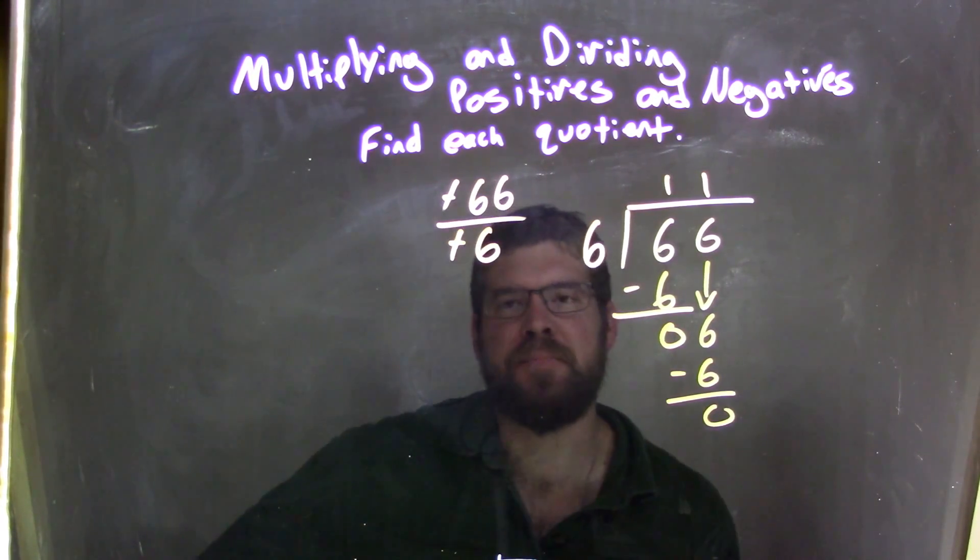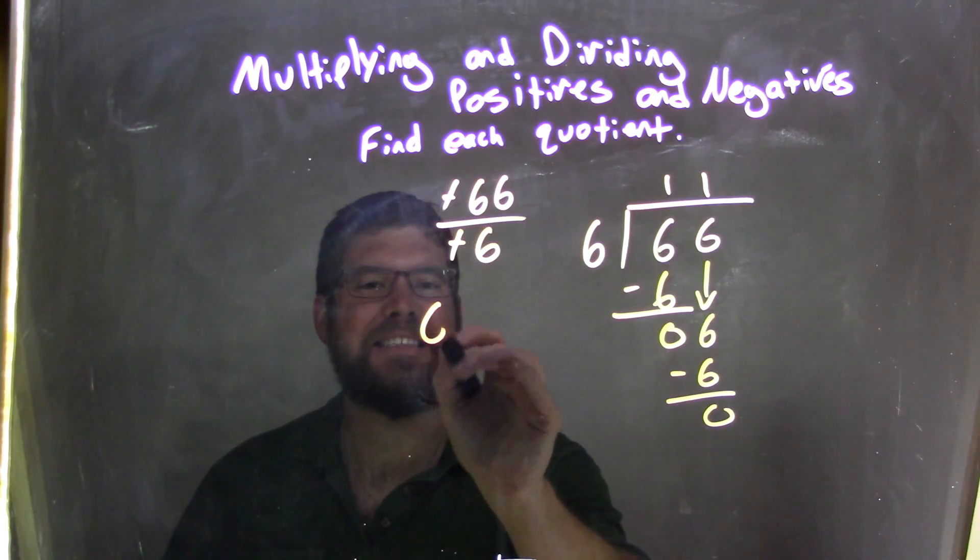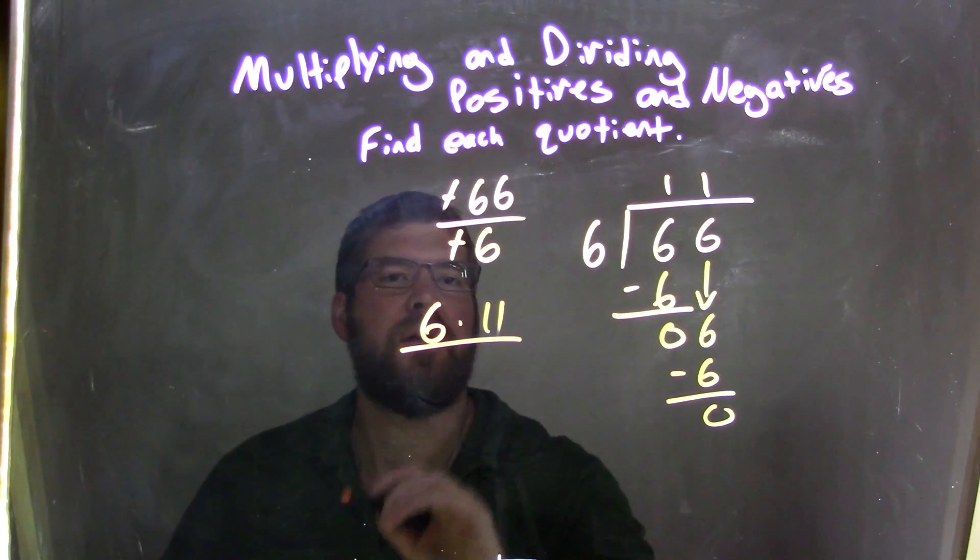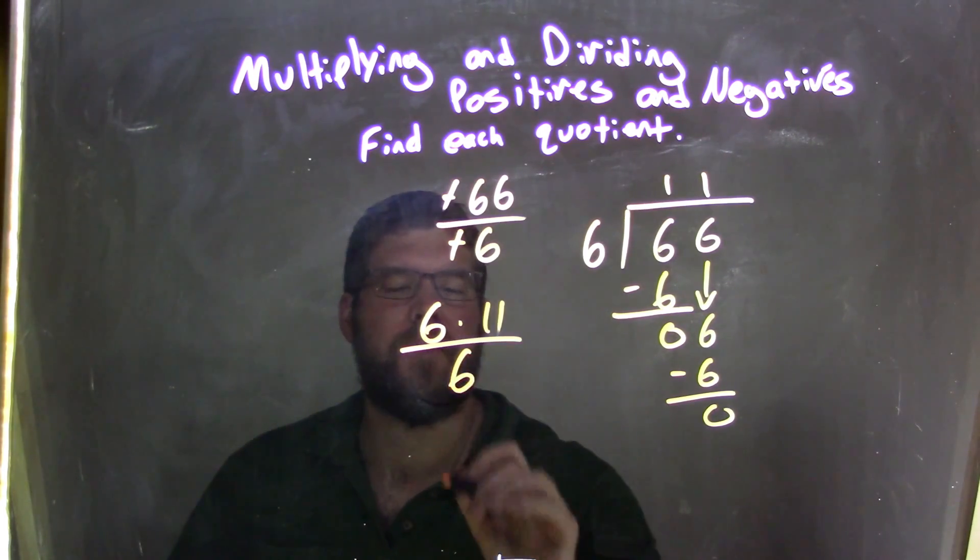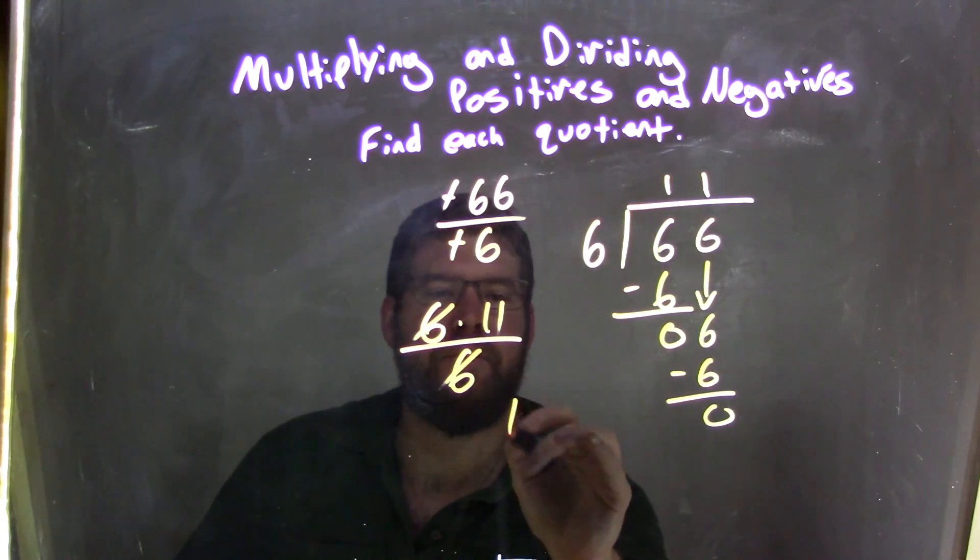But that's a lot of 6s. So if we think about 66, we know that can be broken down to be 6 times 11. Well, 6 times 11 divided by 6, the 6s can just cancel. Boom, boom. And now we're left with a final answer of 11.